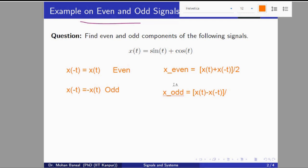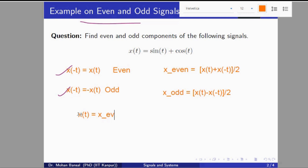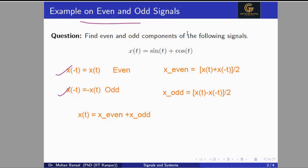So, the properties of even and odd signals: if x of minus t equals x of t, that is the even signal; if x of minus t equals minus x of t, that is the odd signal. If a signal is neither even nor odd, then the signal can be represented by the sum of even and odd components. The question given is neither even nor odd, but is a function of even and odd signals.